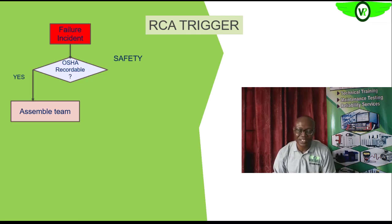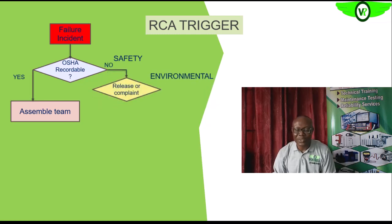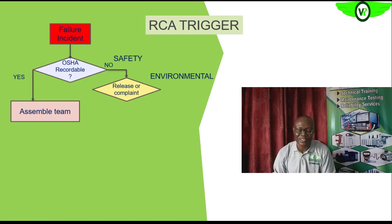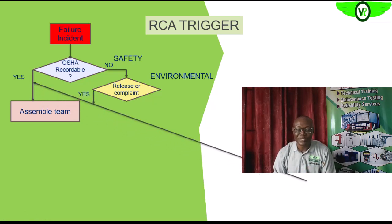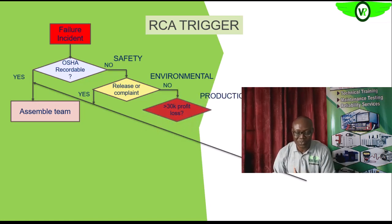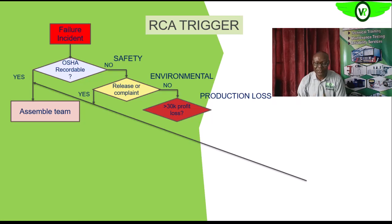If it is not safety critical, we ask ourselves: does it have the potential to affect the environment, or has it already affected the environment? If yes, we assemble an RCA team. If no, we then look at the cost of that failure. If the cost of the failure is very high — more than what we can tolerate — then we need to assemble an RCA team.